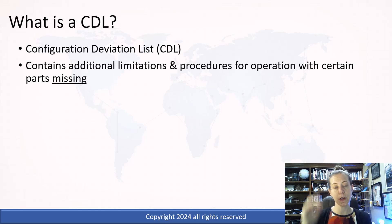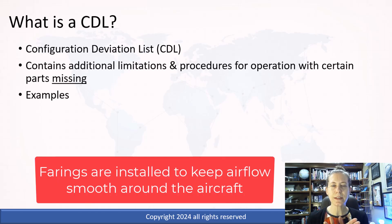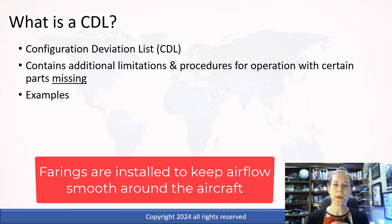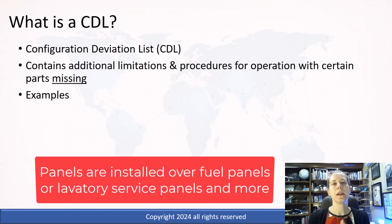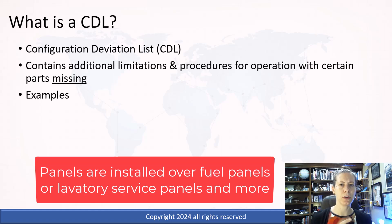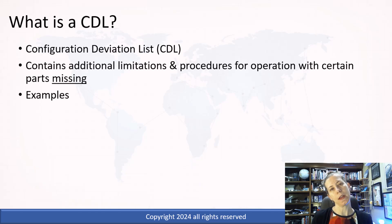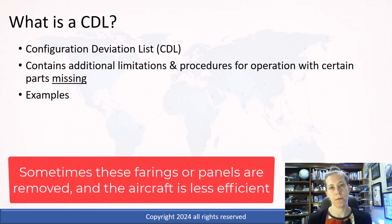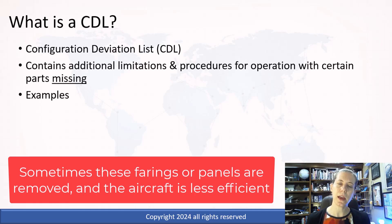Big airplanes again have many complex systems, and the CDL is going to have limitations and procedures for if something is missing. There are a lot of what we call fairings — aerodynamic pieces that fit around parts of the aircraft, especially parts that move such as the flaps. There are also things such as a little piece of a door that might cover a fuel panel or lavatory service panel. These things provide aerodynamic improvements and reduce drag, but they could be missing — sometimes they have to be removed, sometimes they just get broken off. These are items that could be missing but have a consideration for the aircraft's performance.